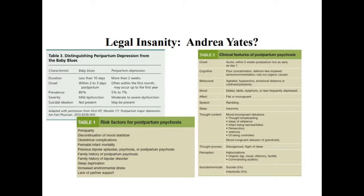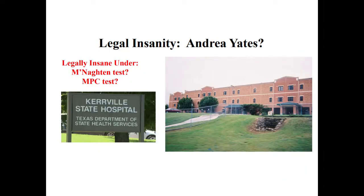Consider how you would analyze Andrea Yates's insanity claims under the McNaughton test and the Model Penal Code test. What would the argument be from the defendant's perspective that she is legally insane? Would outcomes differ under the varying tests? Remember there are multiple prongs in each test, so consider not just the different tests but the different prongs within them, and how the analysis and outcomes might vary depending on the standard applied.